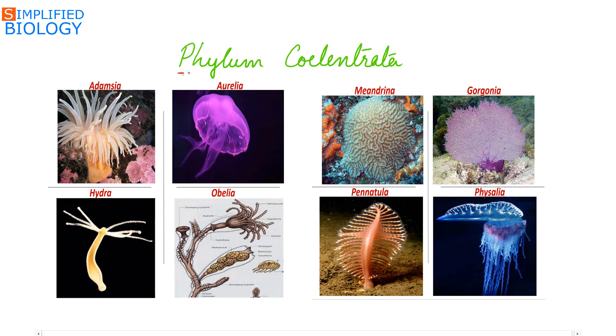Phylum Coelenterata examples are Adamsia, that is sea anemone, Aurelia jellyfish, Mandarina that is brain coral, Gorgonia sea fan, Hydra, Obelia.